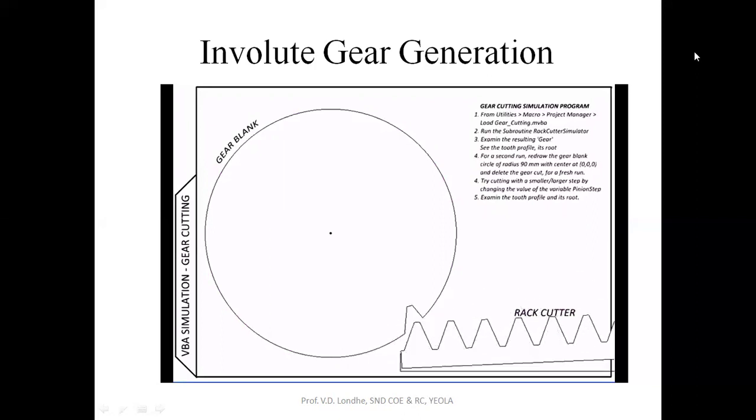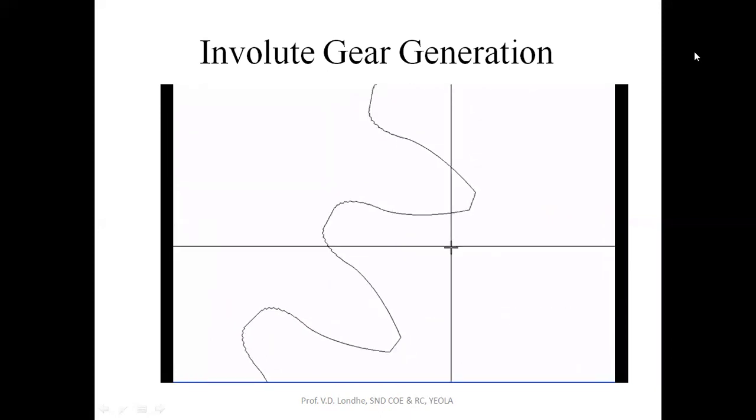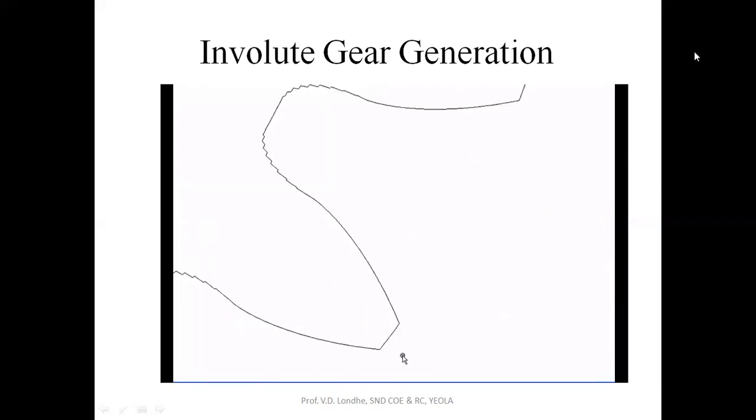The rack cutter is rotating as well as advancing, and whatever is coming in its way it is removing from the gear blank. So slowly you can notice the gear tooth taking shape. Once it's done we can zoom in and take a closer look. Let's stop here and take a look at some of these teeth we have just cut. There they are, much smoother because this time we had given a finer feed.